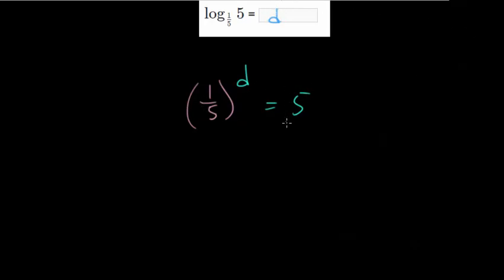So for this one, again, we want to end up with the same base. Or we could either change this to 1/5th to some power, or rewrite this as 5 to some power. So let's rewrite the fraction as 5 to some power. Since we're dividing by 5 once, this is equivalent to 5 to the minus 1.